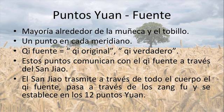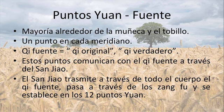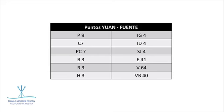¿Por qué es tan importante el punto Yuan? Porque el Zan Yao transmite a través de todo el cuerpo el Chi Fuente, el Chi Original. Pasa a través de los órganos Zanfu y se establece en los 12 puntos Yuan. Por eso es tan importante manejar estos puntos Yuan. Recordemos la combinación: punto Yuan con punto Shu posterior para tratar enfermedades de los Zan. No vayan a confundir Shu posterior con puntos Shu antiguos.